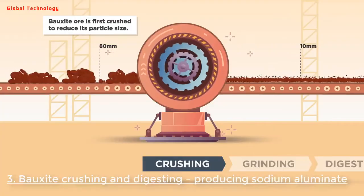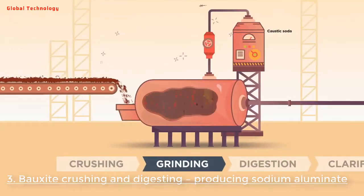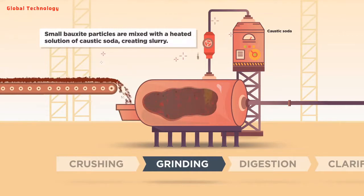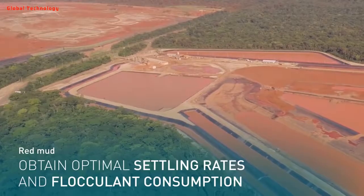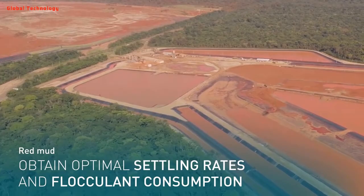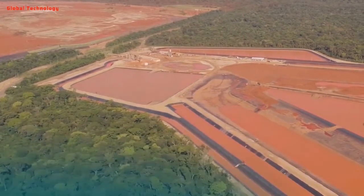Step 3 - Bauxite Crushing and Digesting: The ground mineral is pumped into large pressure tanks with a caustic soda or sodium hydroxide solution and steam heat is applied. The caustic soda reacts with the aluminium compounds in the bauxite to produce a solution of sodium aluminate, also known as slurry. The unwanted residues, also known as red mud, containing iron, silicon and titanium, gradually sink to the bottom of the tank and are removed.